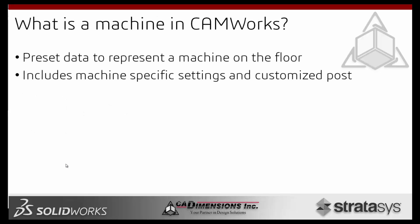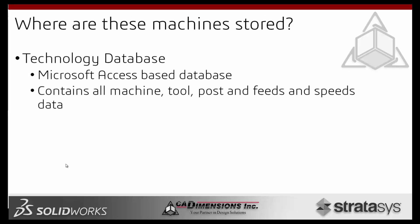What is a machine in CamWorks? The machine inside CamWorks is like a preset data that represents the machine on the floor. Say you have a Haas machine and you want to make sure all your settings — feeds and speeds, your post, spindle speed, feed rates — are matched for your actual machine. You can set up all that within CamWorks so that when you post out, everything will talk to your machine without any issues. This includes machine-specific settings and customized posts.